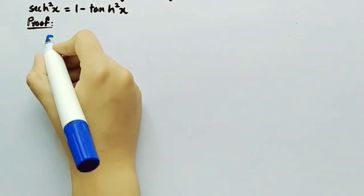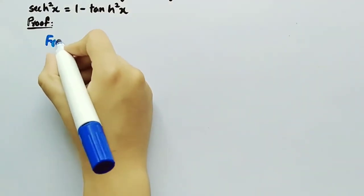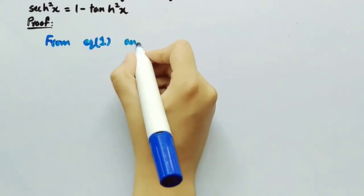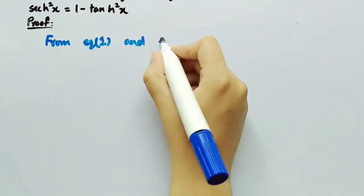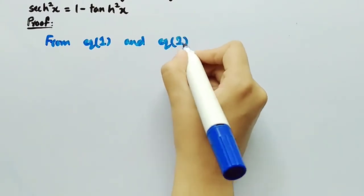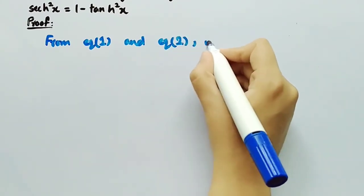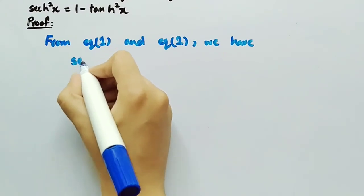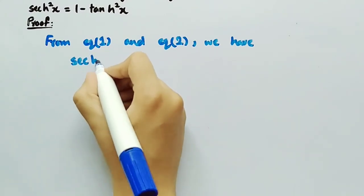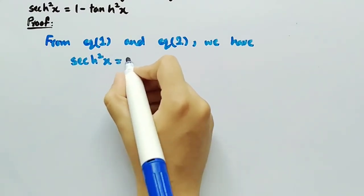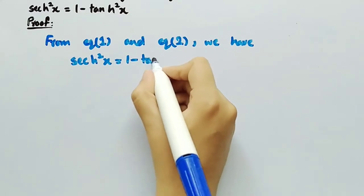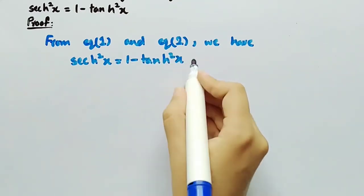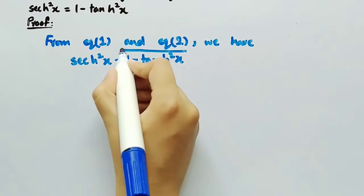From equation 1 and equation 2, we have sech²x equal to 1 minus tanh²x, which is the required proof.